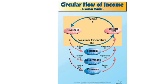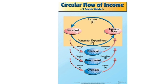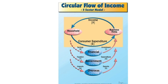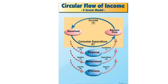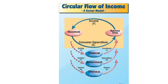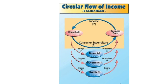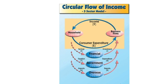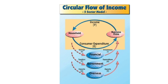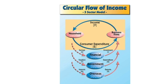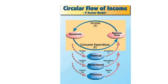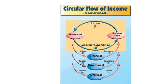As you can see here, there is the 5 sector circular flow of income diagram. There are 2 sections at the top — these are originally from the 2 sector model: the households and the business firms. Keynes expanded this into the 5 sector model by adding the financial sector, the government sector, and the overseas sector.